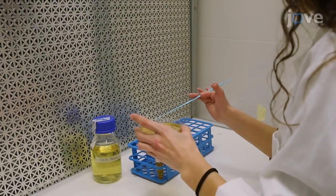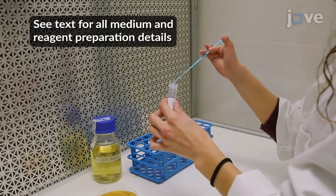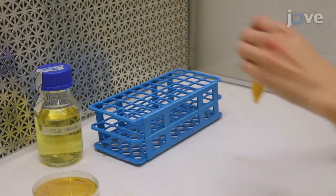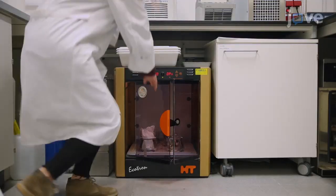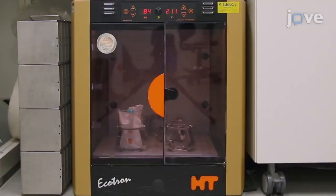Begin by growing a single Agrobacterium colony overnight in 5 milliliters of yeast extract broth or YEB medium supplemented with antibiotics in a 50 milliliter centrifuge tube at 28 degrees Celsius and 200 rotations per minute.